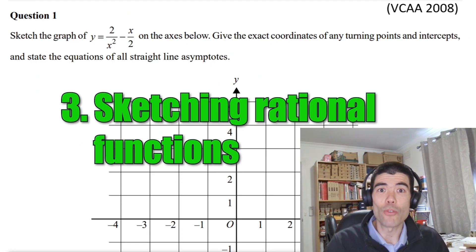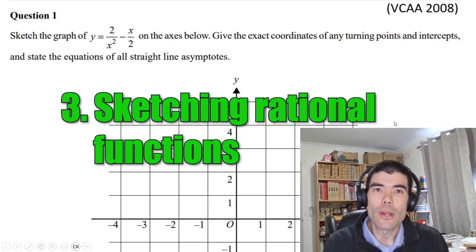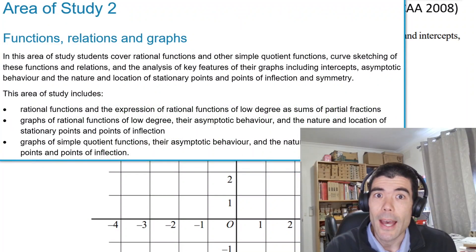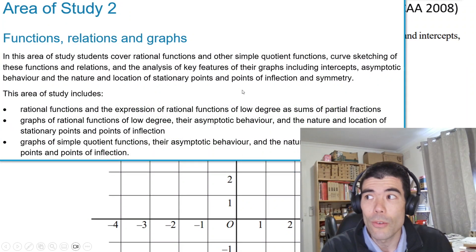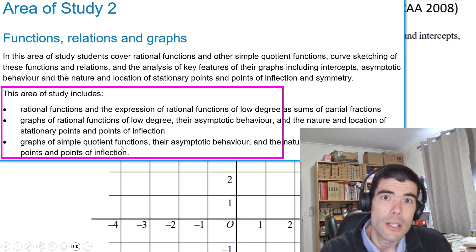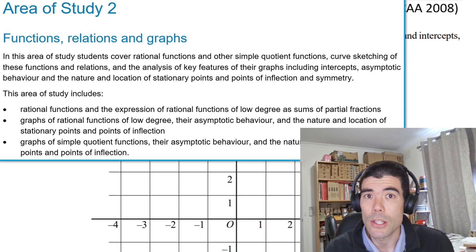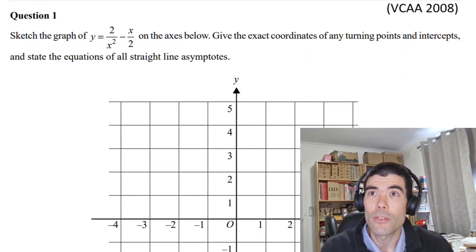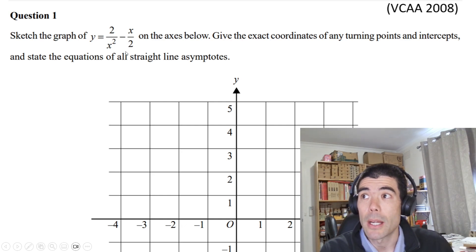The next key skill is sketching rational functions. Although it may not have appeared so much in past exams, with the new study design, if you look at the functions and graphs areas of study, it really only mentions rational functions. We're not having anything about those inverse trig functions, or ellipses, or hyperbola that used to be in the old study design. If there is a graph sketch on your exam one, it's pretty likely that it will be a rational function. This is from VCAA 2008 exam one.